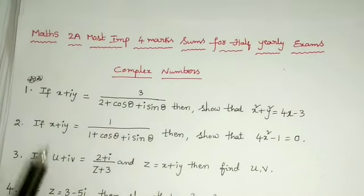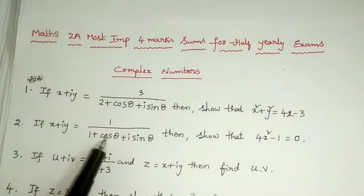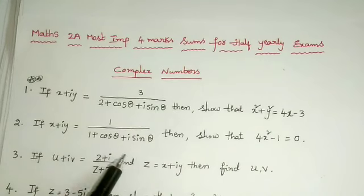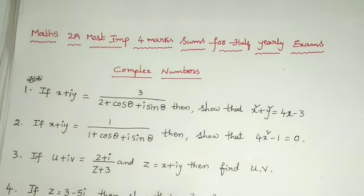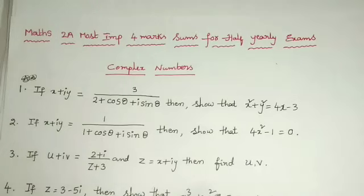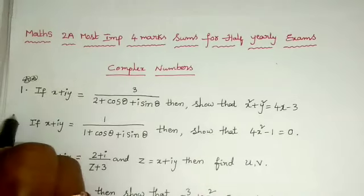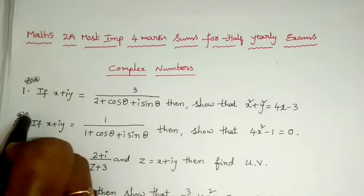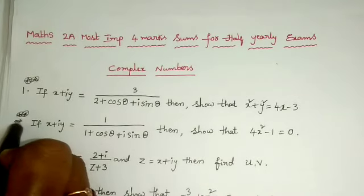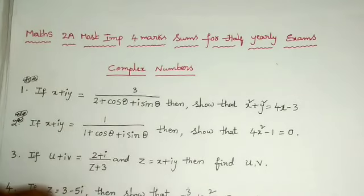The next one: if x plus iy is equal to 1 by 1 plus cos theta plus i sine theta, then show that 4x squared minus 1 is equal to 0. This is also a very very important sum, most frequently repeated question.